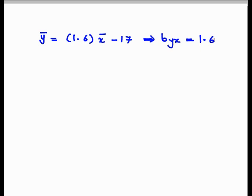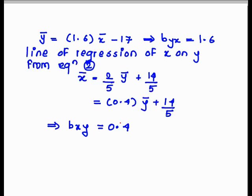Now we consider the line of regression of x on y. With the same process we find the value of b_xy. From equation 2, we get x bar equals 2 by 5 y bar plus 14 by 5, which equals 0.4 y bar plus 14 by 5. So b_xy is equal to 0.4.